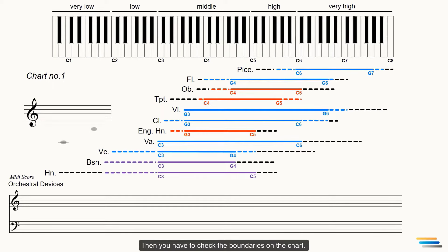Then you have to check the boundaries on the chart. I'm going to use chart number one of the best combinations of unison and octave doublings. Let me check if my melody will be in the best registers of the trumpets and horns. If I give the melody to the horns, they will be between C4 and C5.